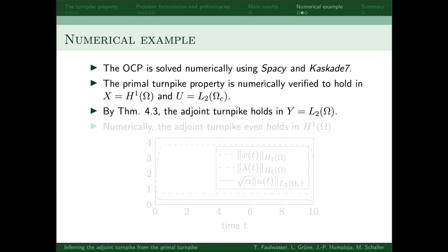We verify the turnpike property for the state and control numerically for the state space H1 and the input space L2. Thus, one of our results then implies that the adjoint turnpike holds in L2. This is essentially because H1 is embedded into any Lp space, so that we could choose Y to be L2 for any polynomial non-linearity of the state.